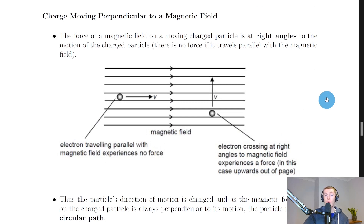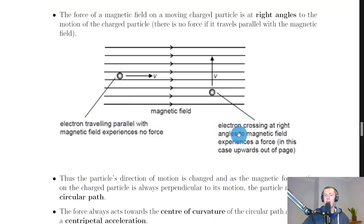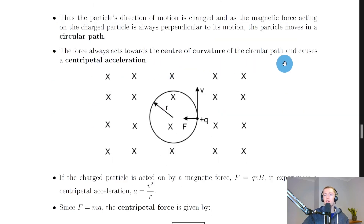We also looked at how charge moves perpendicular to a magnetic field. The force of a magnetic field on a moving charged particle is at right angles to the motion of the charged particle, and there's no force if it travels parallel with the magnetic field. If a charged particle moves at right angles to the magnetic field, it experiences a force and moves in a circular path, with the magnetic force always acting towards the center of curvature, causing a centripetal acceleration.